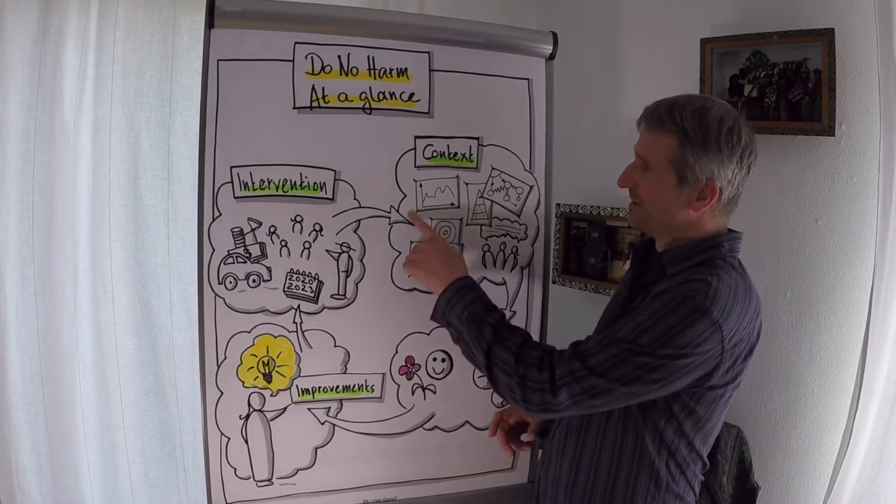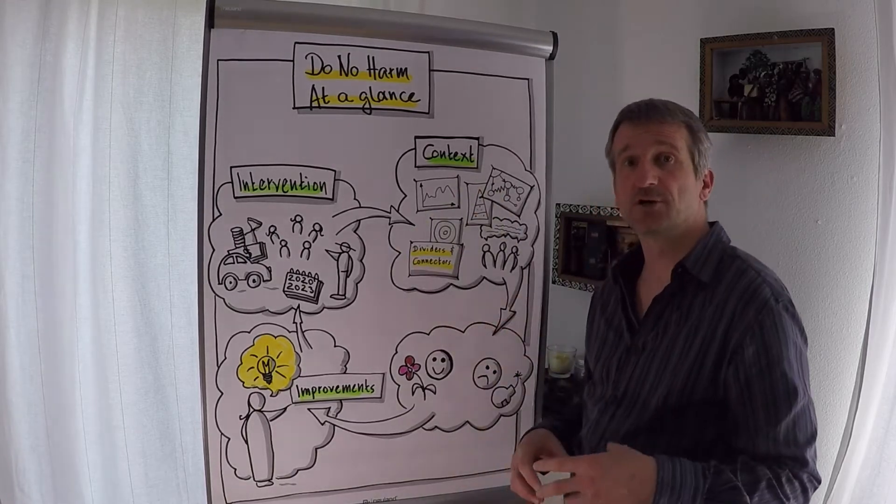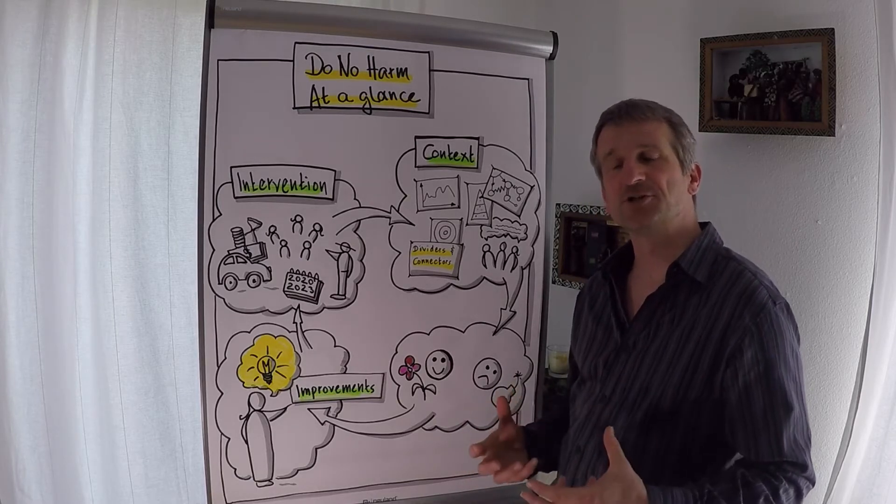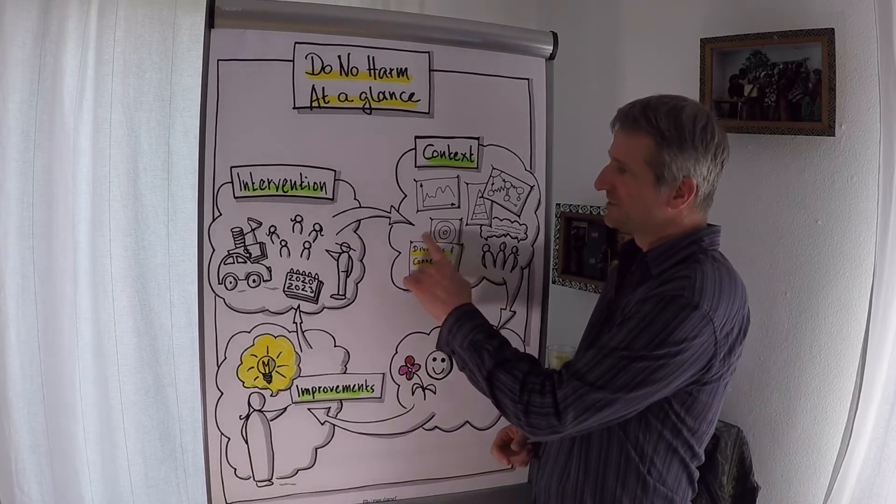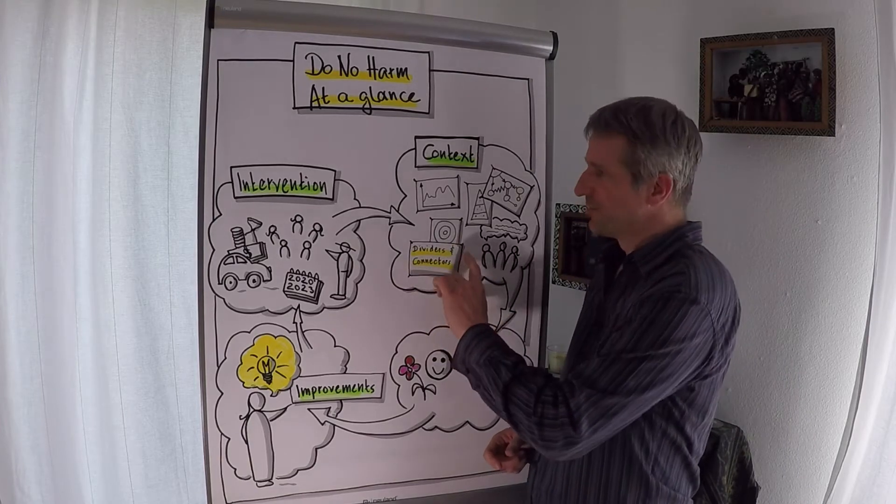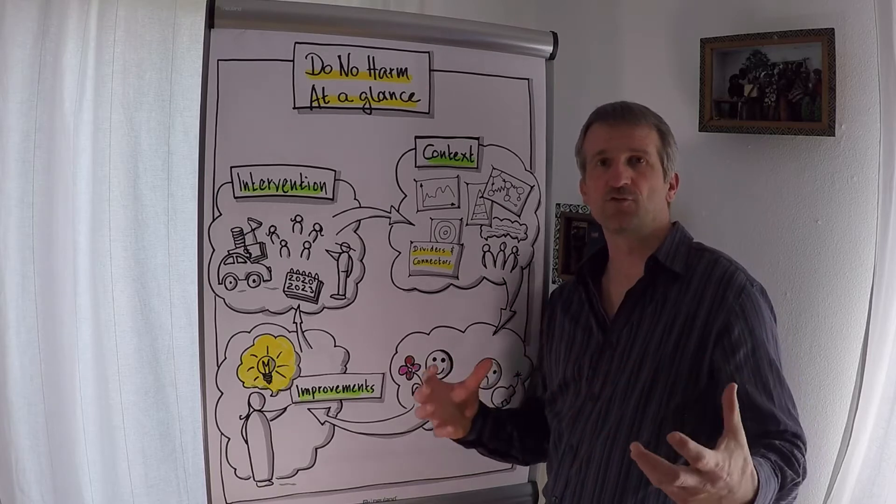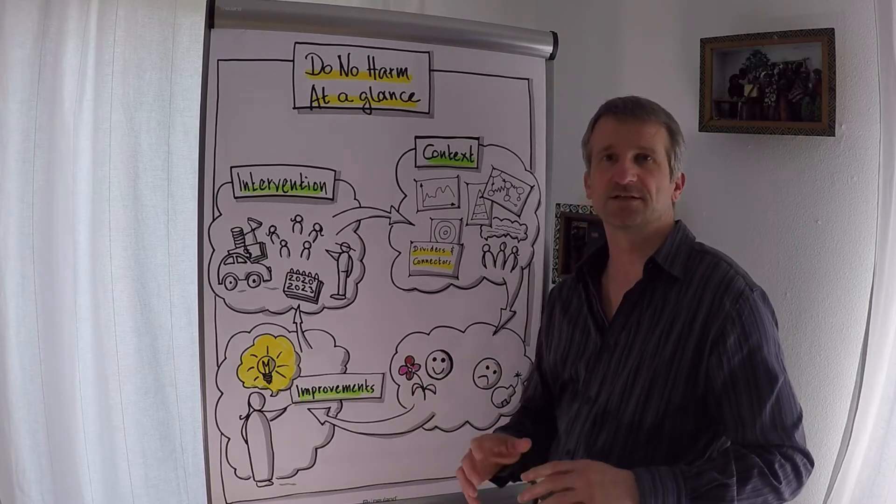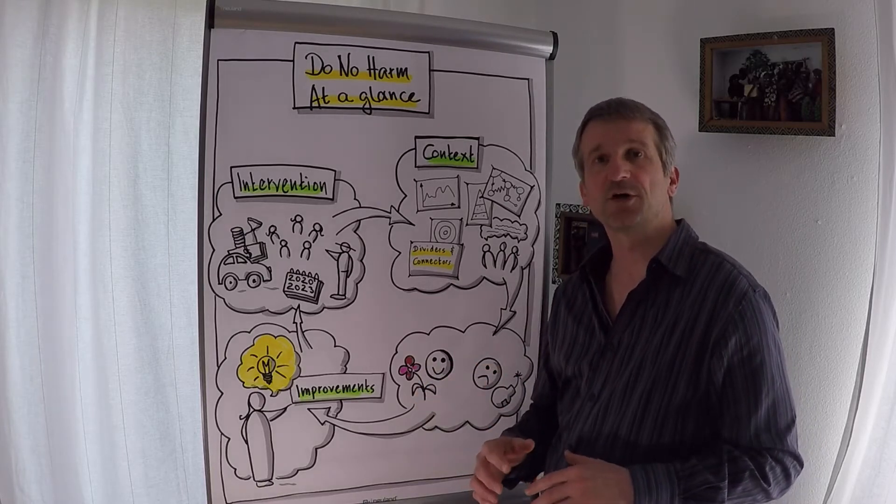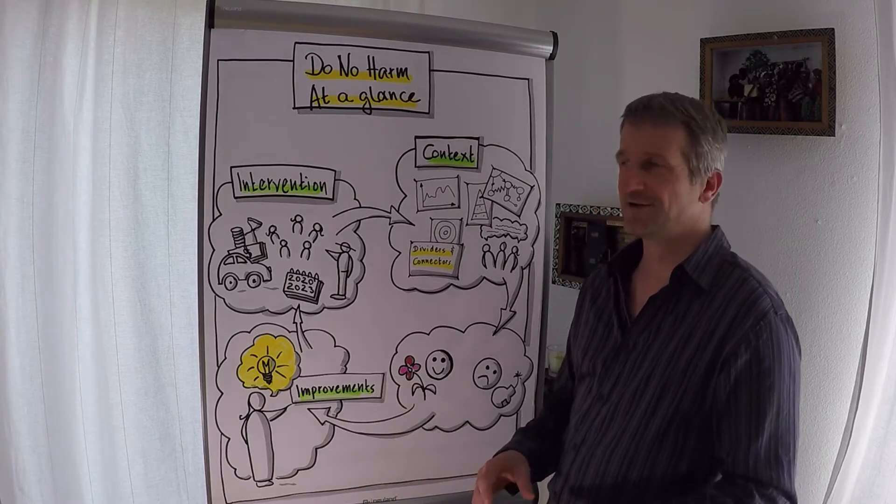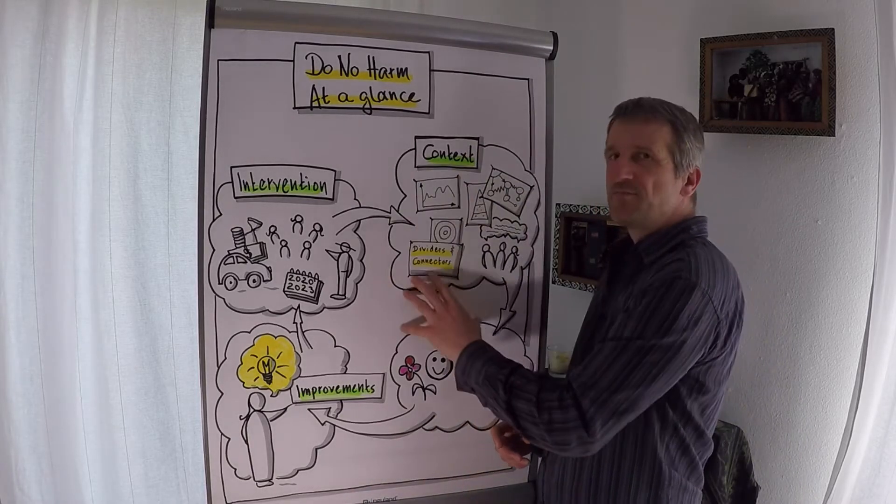And these tools build nicely on what you learned earlier, kind of doing a conflict analysis, understanding the conflict, understanding the context in which you are active. And it gives you some additional tools to what you already know, something which is called dividers and connectors, so that you really have a broad view of what are the factors, the dynamics at work in a society which drive people apart or which bring people together. So one big aspect of Do No Harm is really understanding the conflict, understanding the context.